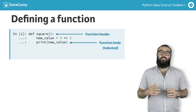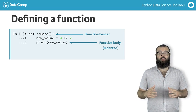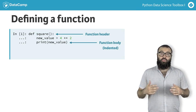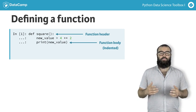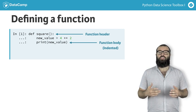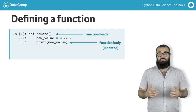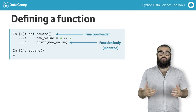Now, whenever this function is called, the code in the function body is run. In this case, new_value is assigned the value of 4 to the power of 2 and then printed out. You can call the function as you do with pre-built functions, square. This should yield the value 16.